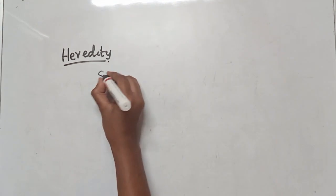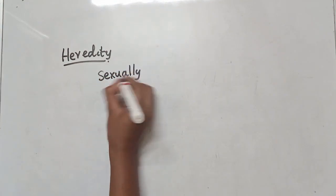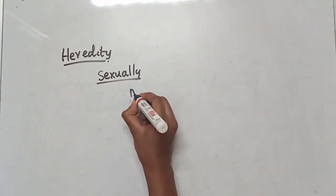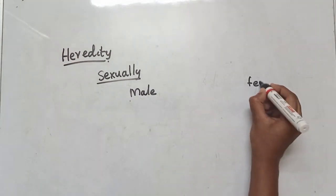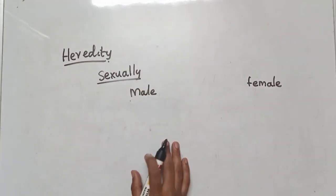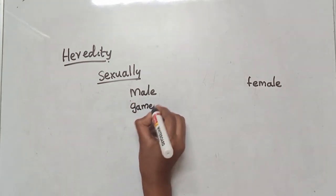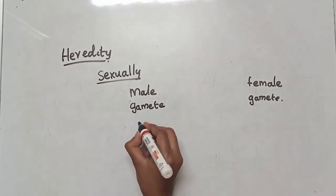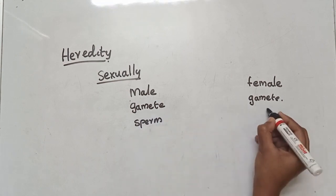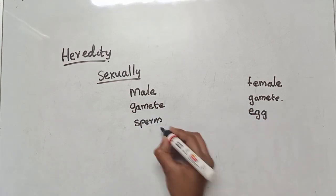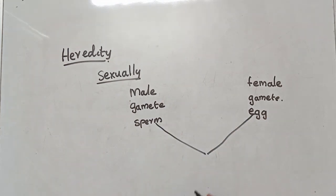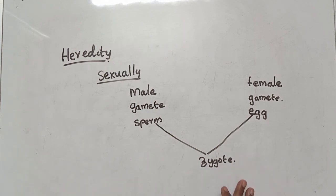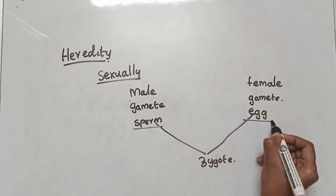We say we are sexually reproducing organisms. For example, human beings reproduce sexually. We have male and female, and in sexual reproduction, male gametes and female gametes fuse. Male gamete is sperm, female gamete is egg — so male sperm and female egg fuse. That is sexual reproduction in human beings.